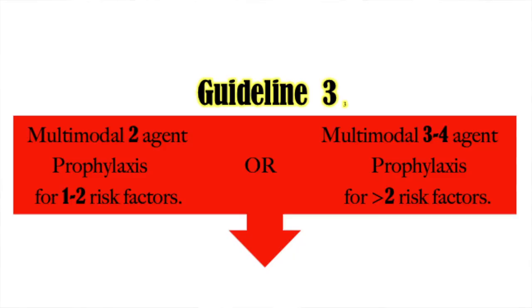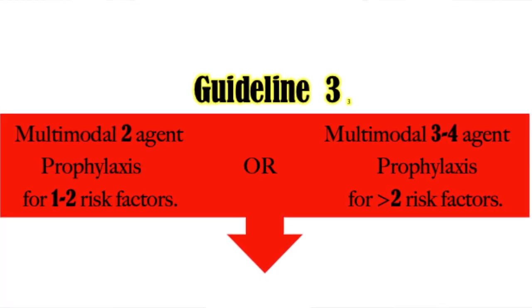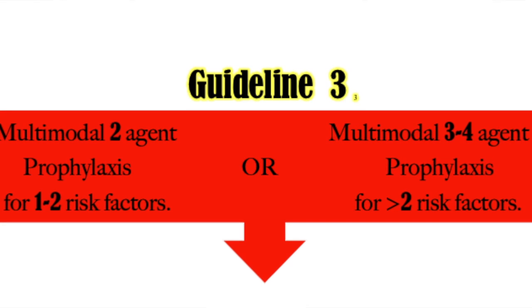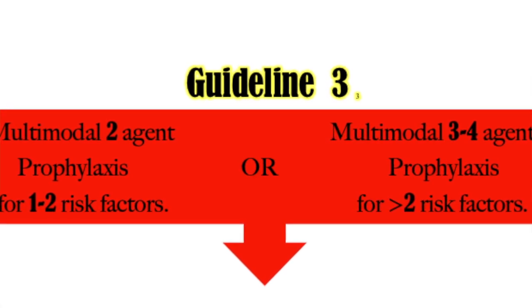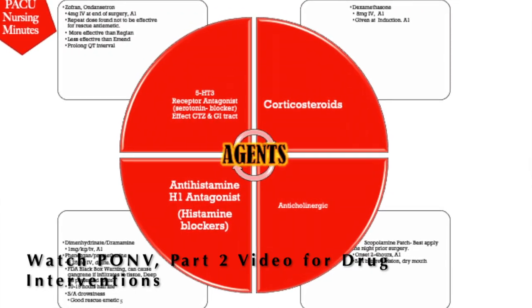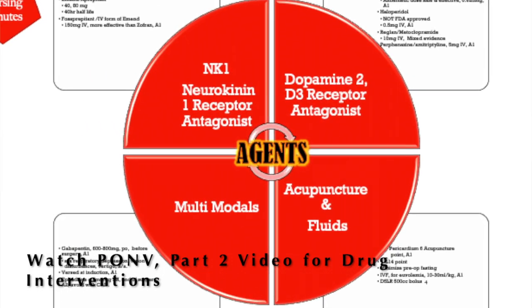We left off with guideline number three, which talks about giving two agents of prophylaxis if a patient has one to two risk factors, and three to four multimodal agents if they have greater than two risk factors. In part two, I covered different drug classes for multimodal prophylaxis. There are two more classes we didn't cover, so let's talk about those now.